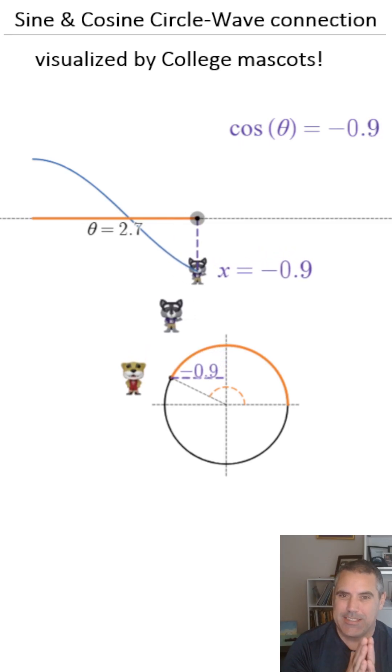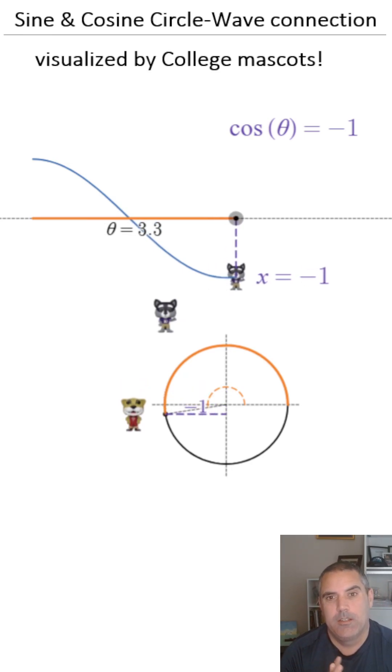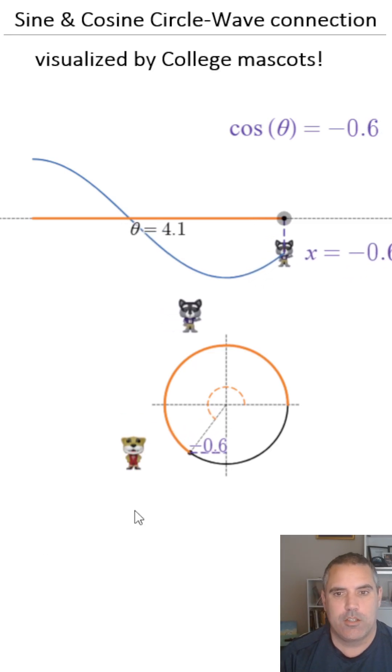But again, the axis is theta. It's the angle. It's also the arc length. So we're giving the location in terms of the angle and the arc length. So there you go.